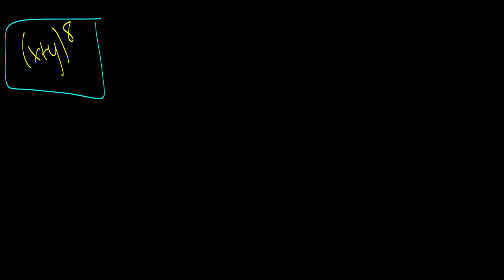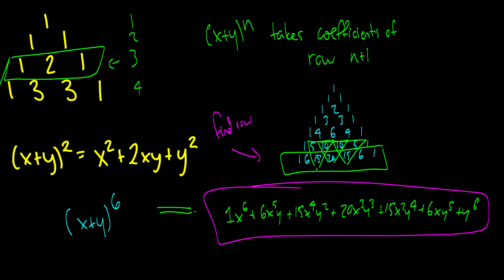Before I go, I'm going to ask you to do (x + y)^8 on your own — I won't solve it for you, but have a go at it. It should be really simple. You just need to extend the triangle two more rows, figure out the pattern, and see what's going on. That was the binomial theorem and Pascal's triangle — if you have any questions feel free to leave them in the comments.